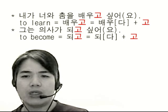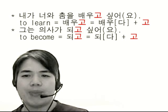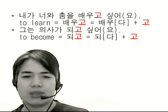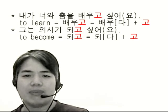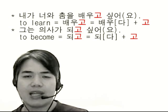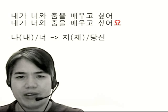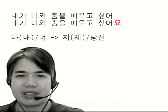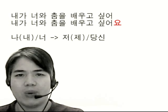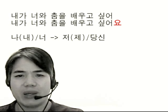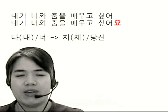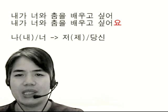There are several linking particles like 고 in Korean, but this topic won't be covered today. By adding 요 at the end of a verb, we make a sentence formal. For example, 내가 너와 춤을 배우고 싶어 — you say this with a friend or a younger person. Adding 요: 내가 너와 춤을 배우고 싶어요 — you say this with a stranger or an older person.